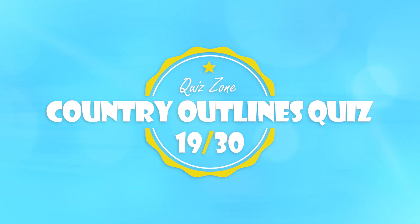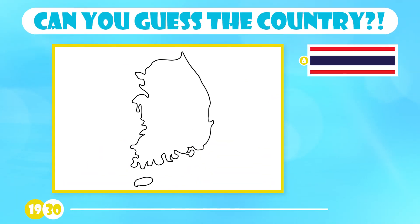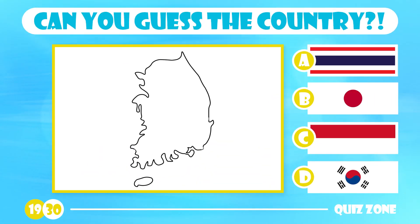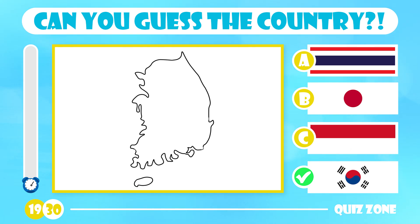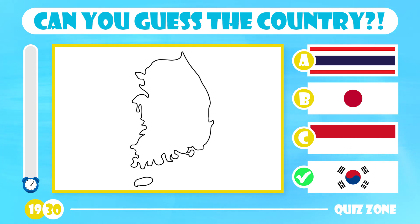Which country is this one? Is it Thailand, Japan, Indonesia or South Korea? The answer is South Korea. Located in East Asia and comprising the southern part of the Korean peninsula, the population of the country is over 51 million people.